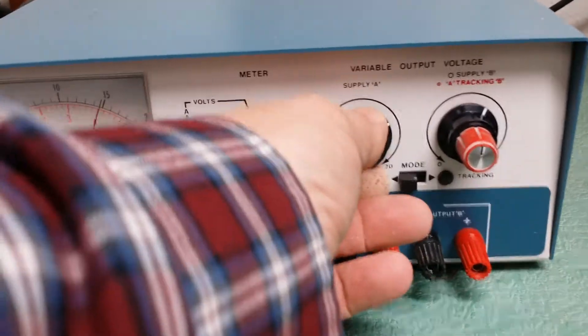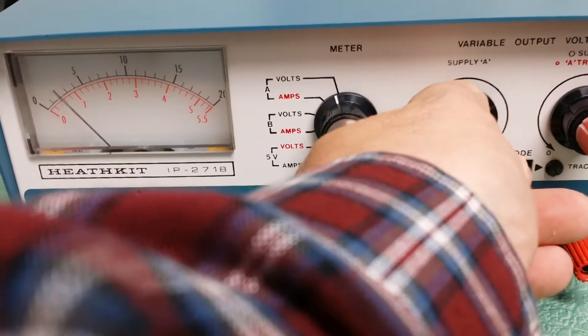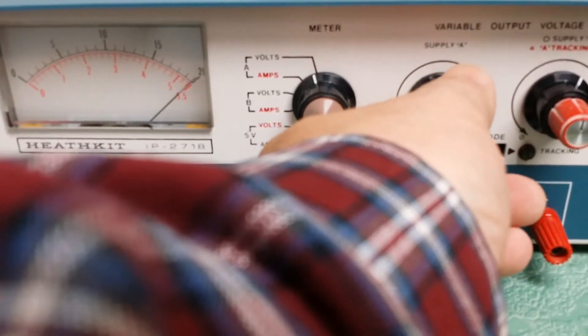Here's your A supply and as you can see you can lower it all the way down to 0 or slowly, gradually bring it up all the way to 20, which there it is.